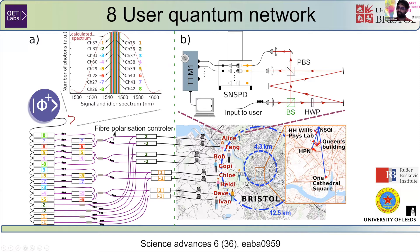So depending on the way we redistribute these channels to different users, we can create a fully connected mesh or a fully connected network between all these users. We've been able to demonstrate this with long distance links in a loopback configuration across various locations in the city of Bristol, including across a few kilometers from the university buildings all the way to the city center.